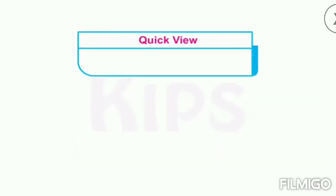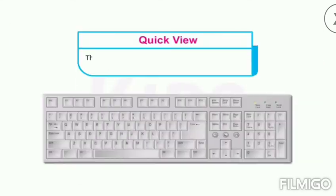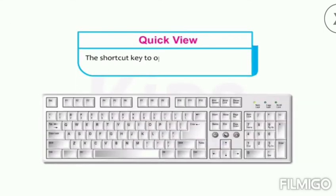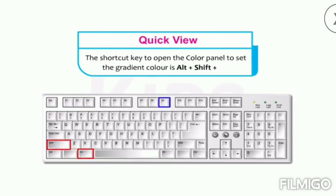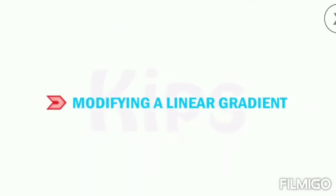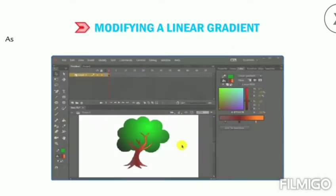You can add the new gradient color to the Swatches panel by clicking the Add to Swatches button below the gradient definition bar, or click the hamburger button at the top right corner of the Color panel and select Add Swatch from the drop-down menu. The shortcut key to open the Color panel for setting gradient color is Alt+Shift+F9.